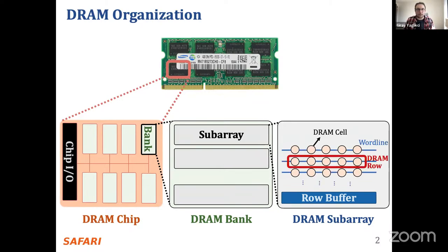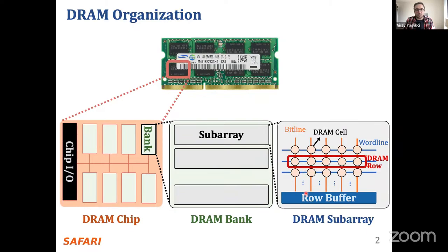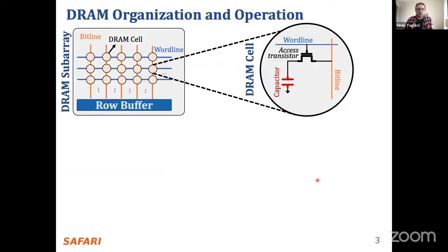You do that by asserting the blue lines shown here, called word lines. Once you assert the word line, you activate the DRAM row, and the DRAM cells are already connected to the row buffer through bit lines. So you can access data from the row buffer after this activation.